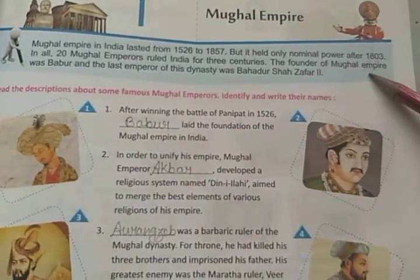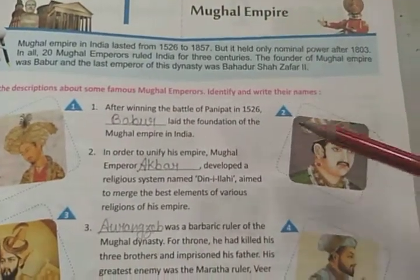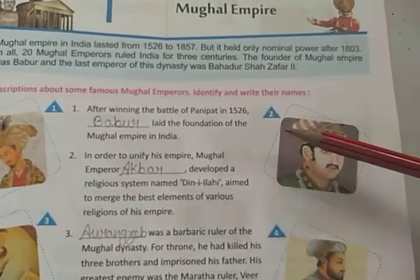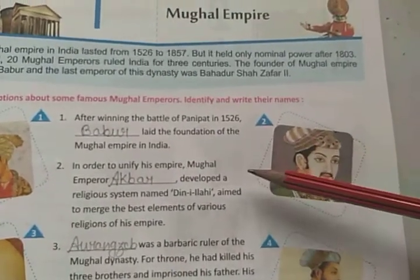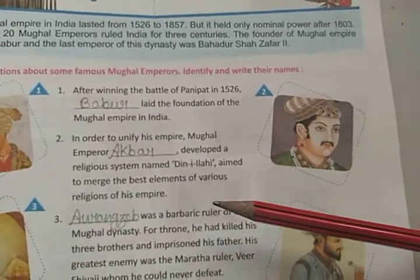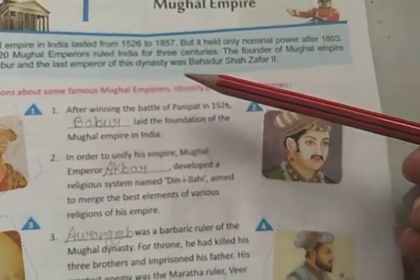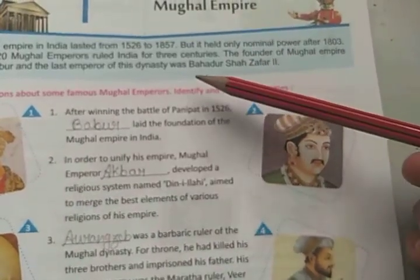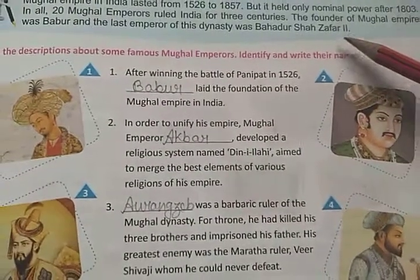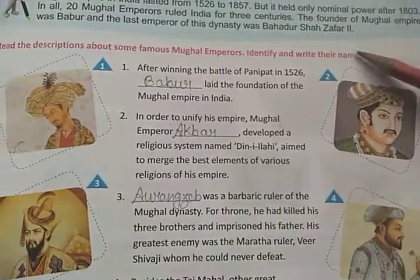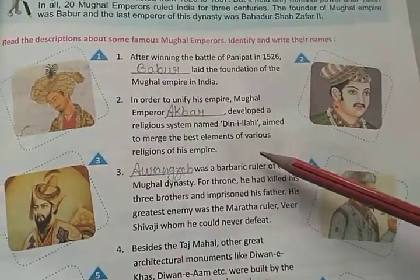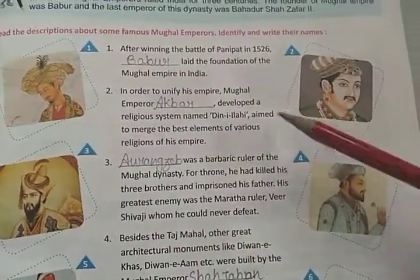The founder of the Mughal Empire was Babar. Babar came from Afghanistan and established the Mughal dynasty in India. The last emperor of this dynasty was Bahadur Shah Zafar II — he was the last samrat of this dynasty, and the first samrat was Babar.